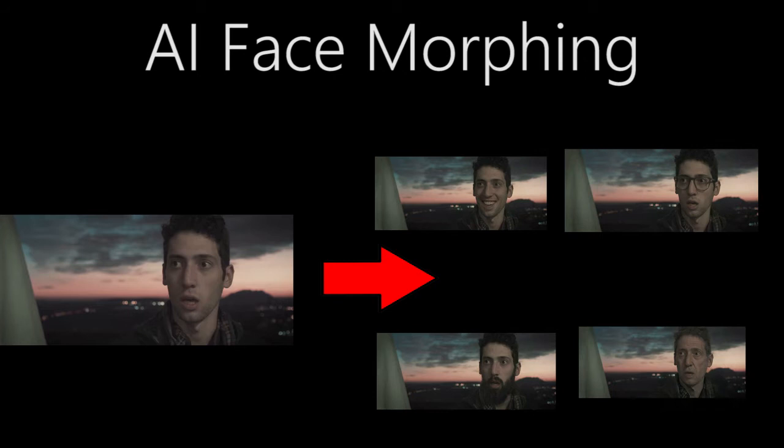Let's see some results. With some AI face morphing, we take the keyframe and we add a smile, glasses, some beard, and even aging. The results generated are more than satisfactory.